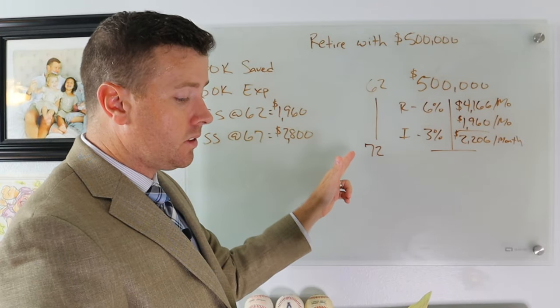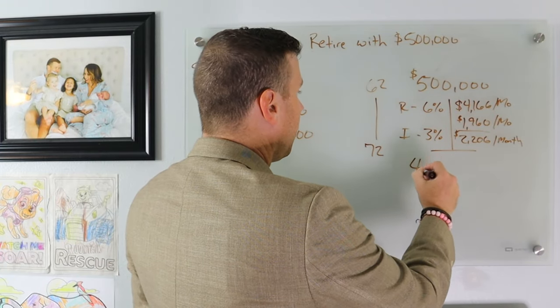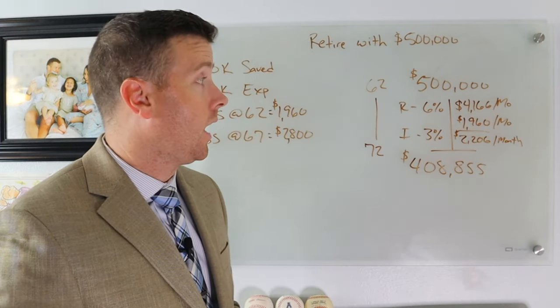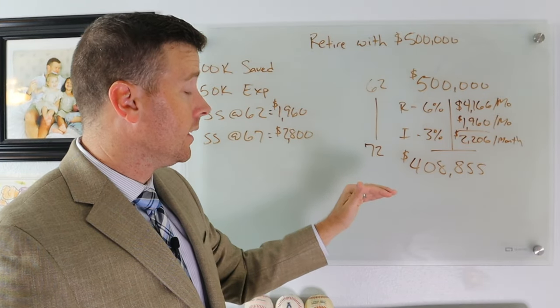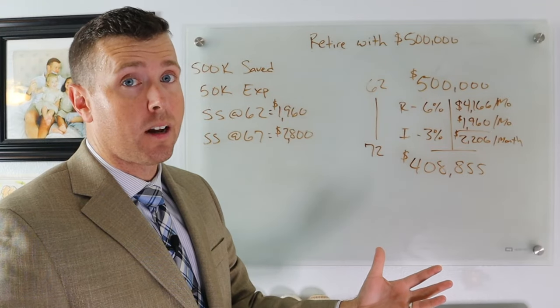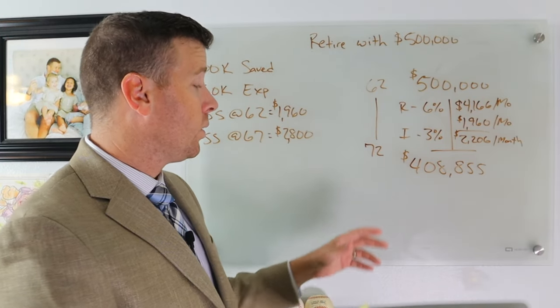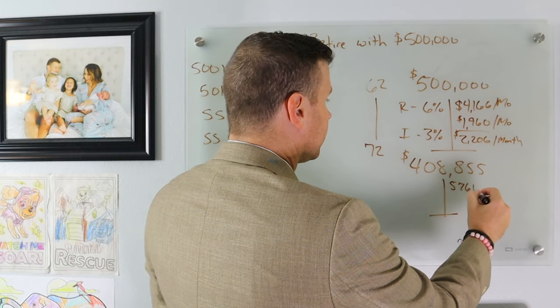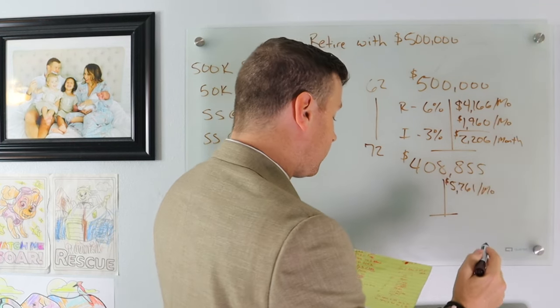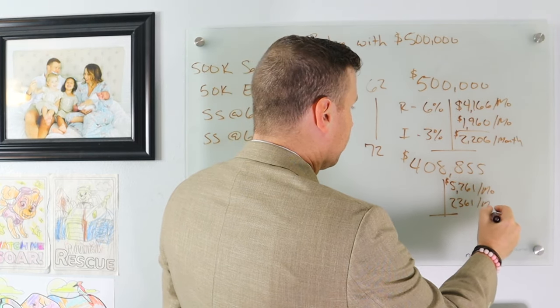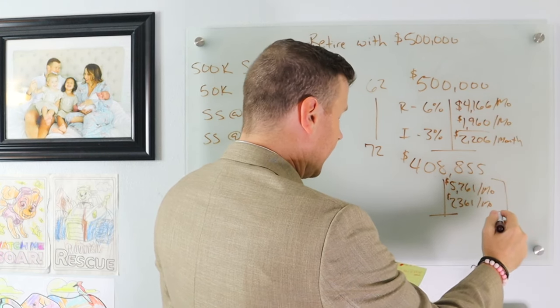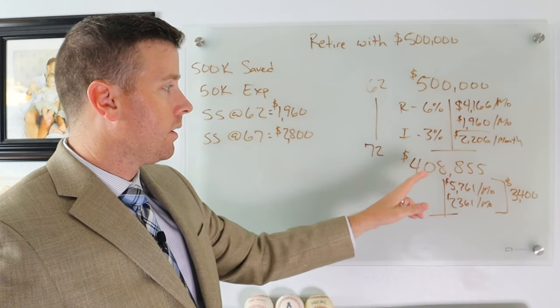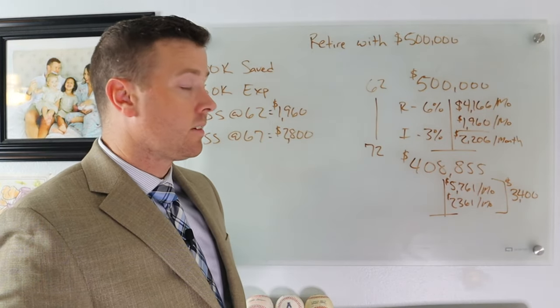From 62 to 72, we go from $500,000 to $408,855. We're down about $92,000 in a 10 year period. We still need $50,000 a year, but with a 3% inflation rate. So at 72, our new expenses are $5,761 per month. Our Social Security has grown to $2,361 per month, which means we need about $3,400 from our investments.